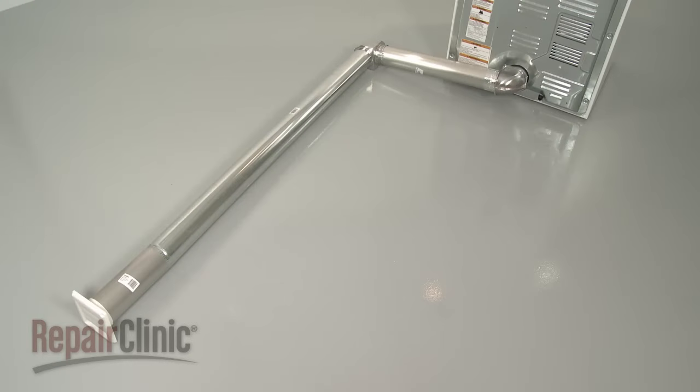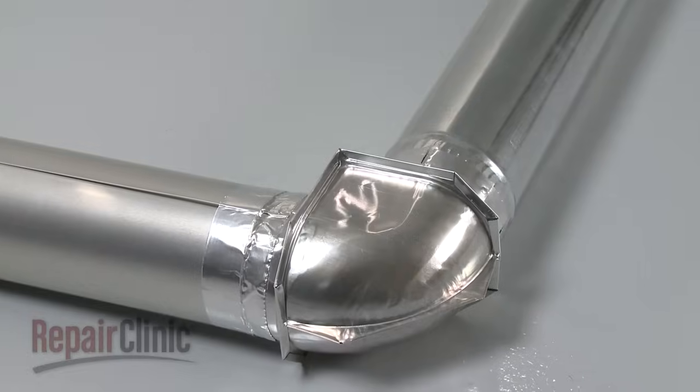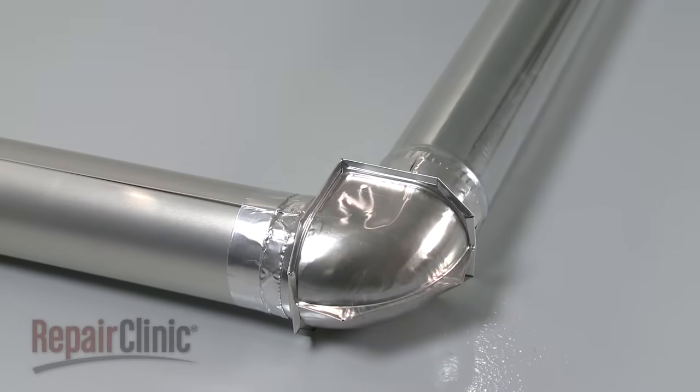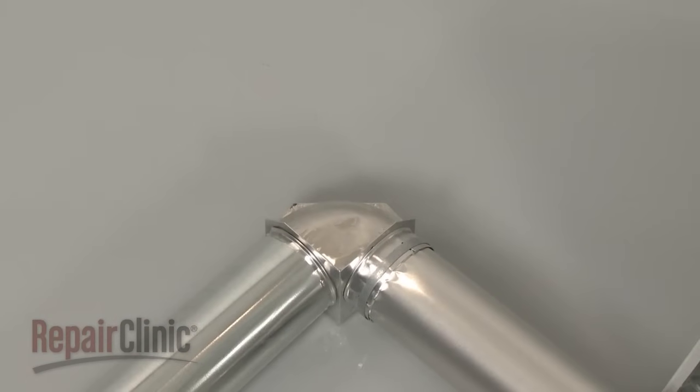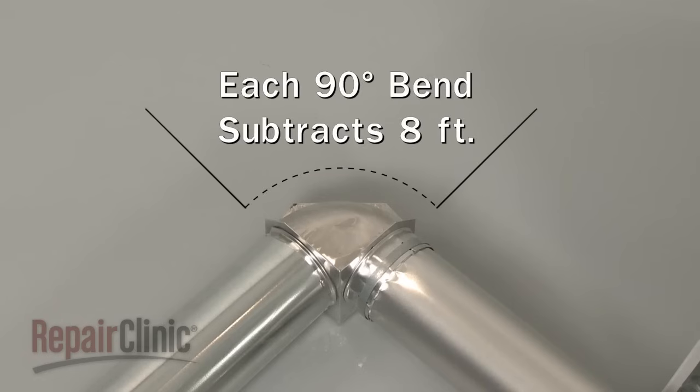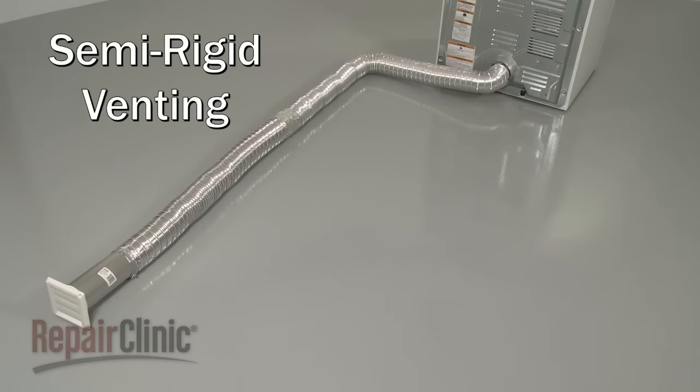The best type to use is rigid venting, which is usually efficient up to 40 feet in length. However, be aware that any bend in the venting impedes airflow and reduces the length limit for efficient operation. For example, each 90-degree bend subtracts 8 feet from that 40-foot limit. The other type of venting you can use is semi-rigid.